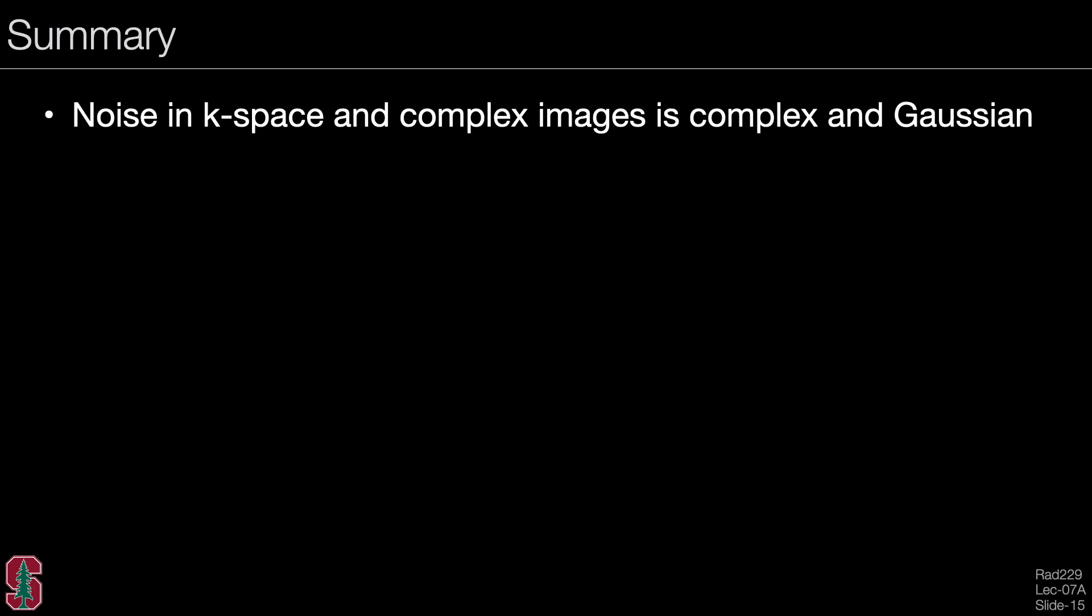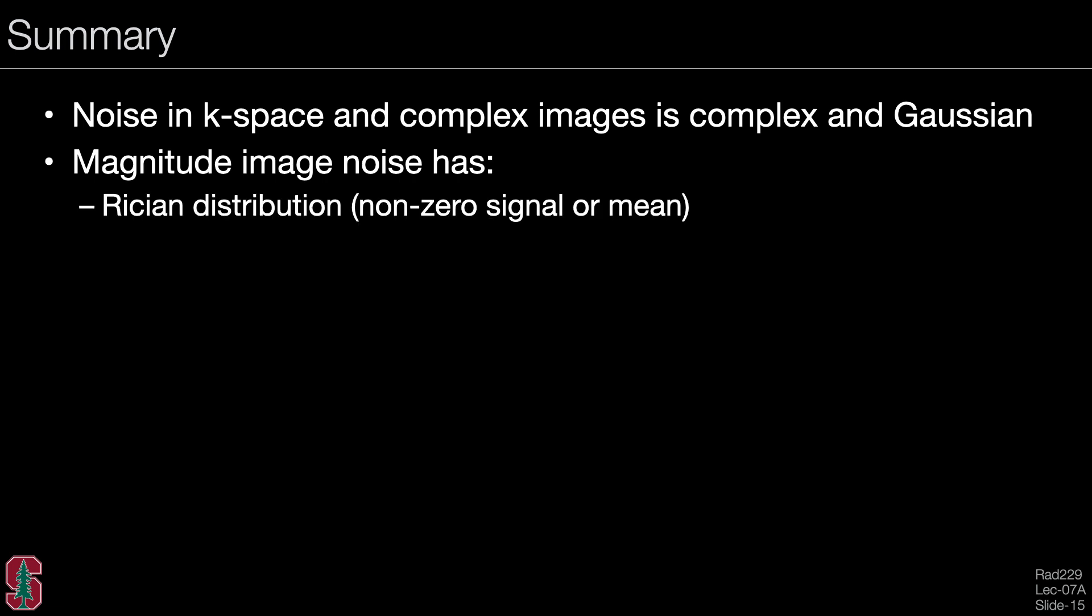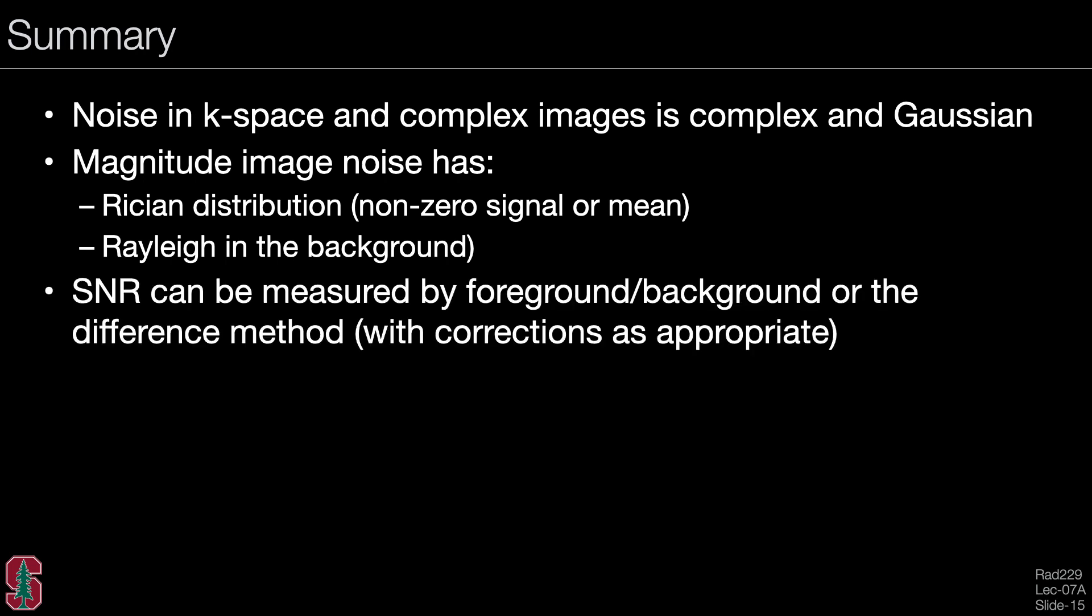To summarize this lecture, the noise in k-space and complex images is complex and Gaussian. Magnitude image noise has a Rician distribution when there is a non-zero signal or mean. It has a Rayleigh distribution in the background, which also has a non-zero mean. The SNR can be measured by measuring the foreground and background and correcting appropriately or using the difference method.